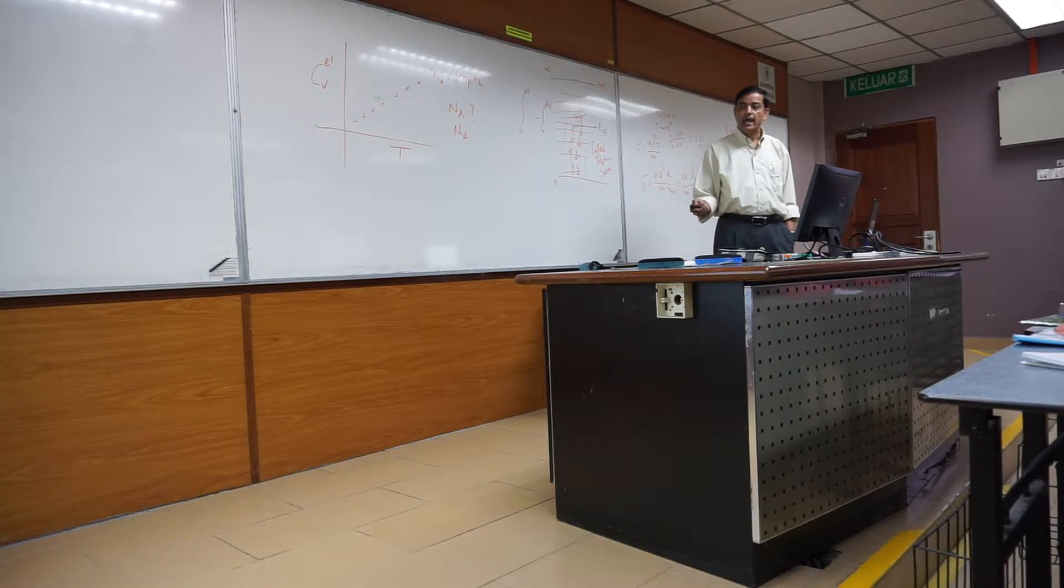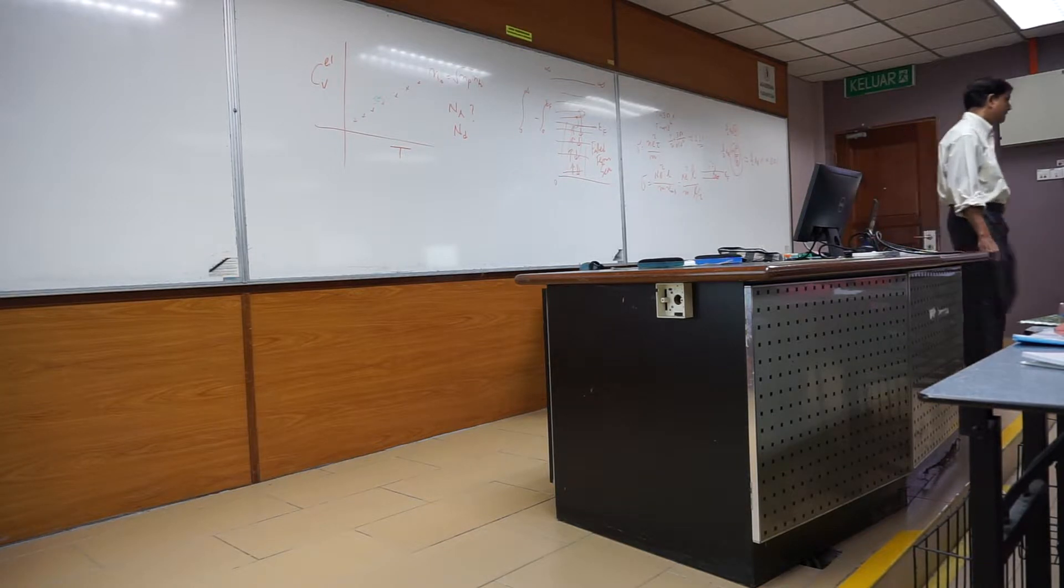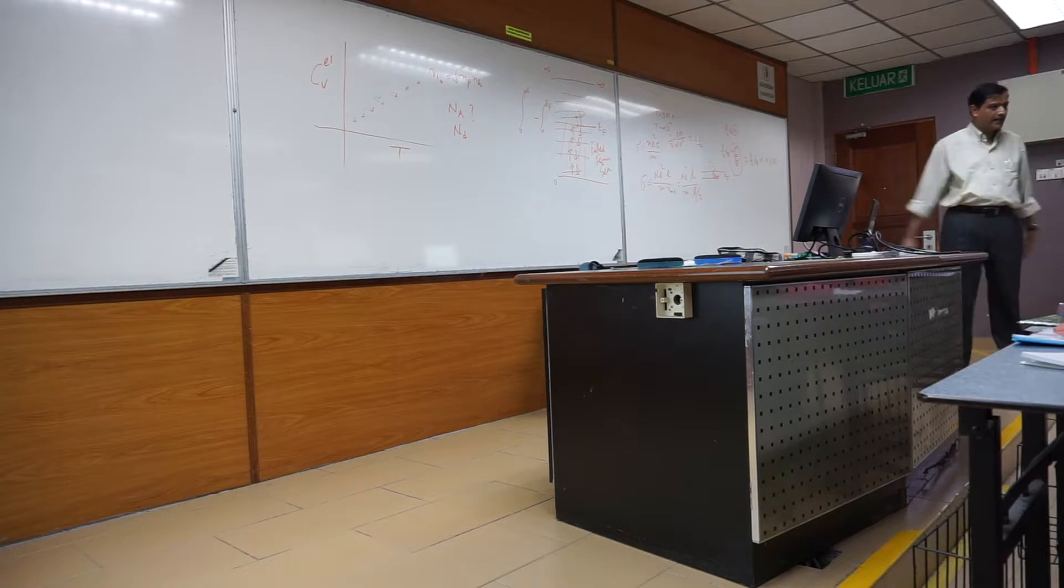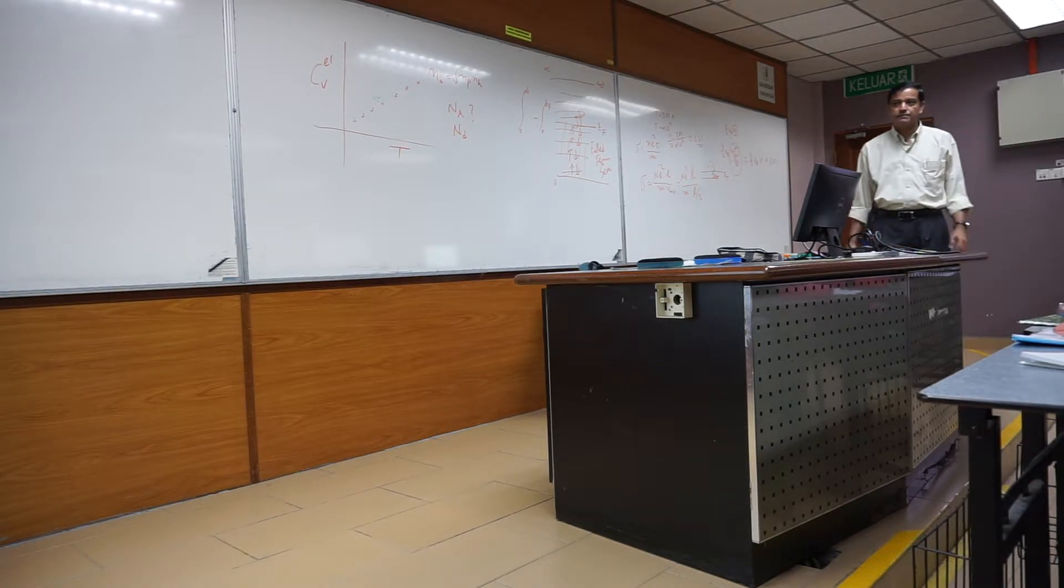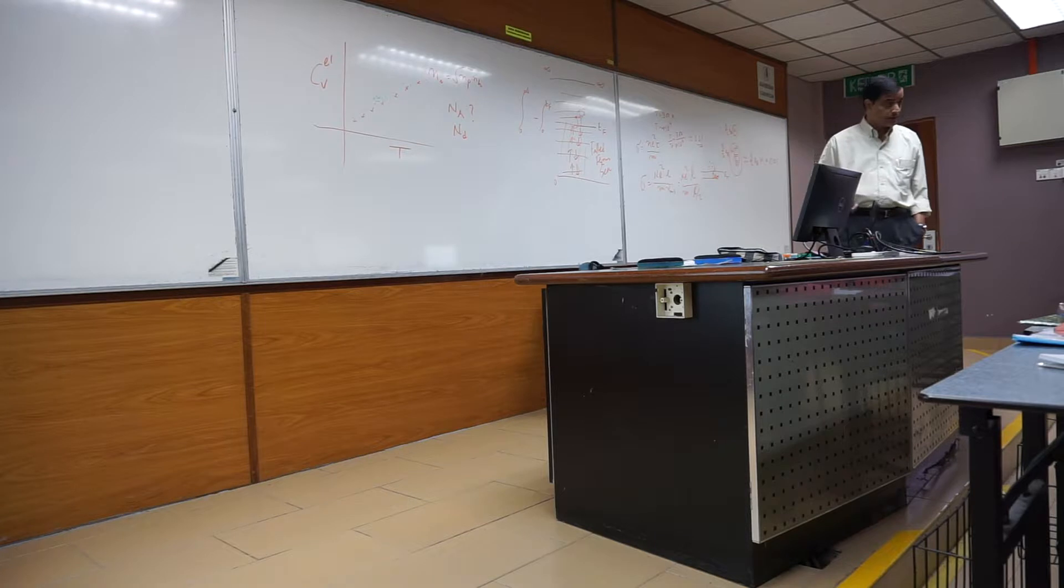This was for the copper and the theoretical value was 59 into 10 to the power 6. So now you can see this is 10 times higher than the expression. Because 53 and 59 are really 10 times higher, slightly more than 10 times. So that means classical prediction was wrong. So this was first clue that classical theory will not work.